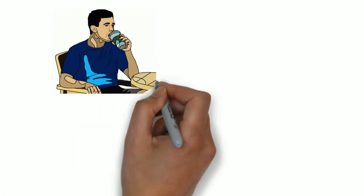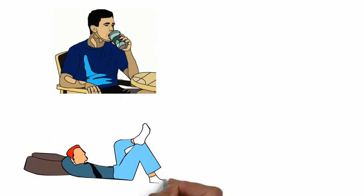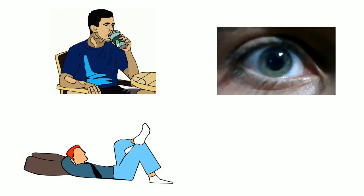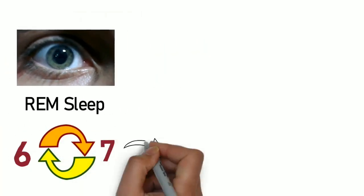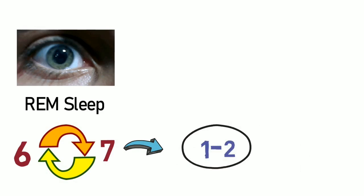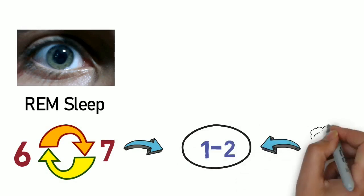When you drink, you typically fall straight into a deep sleep, missing the important rapid eye movement sleep, also called REM sleep. While you are supposed to have between 6 and 7 cycles of REM sleep a night, you typically only have one or two when you have been drinking.